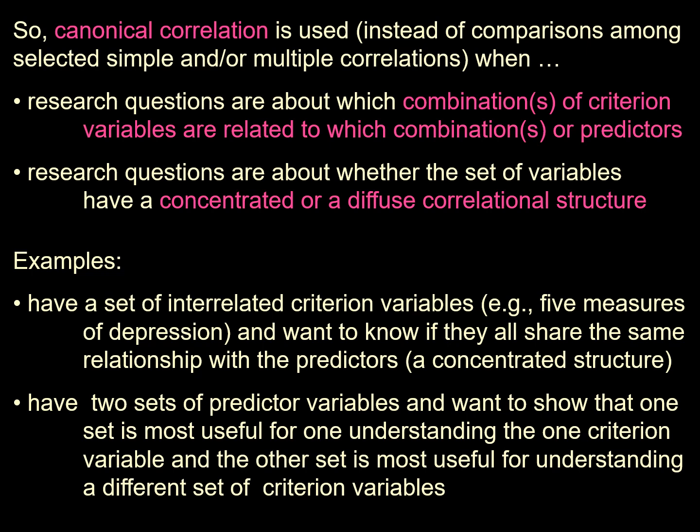For example: we have a set of interrelated criterion variables — say five measures of depression — and we want to know if they all share the same relation with the predictor. That is a concentrated structure. Alternatively, we may have two sets of predictor variables and want to show that one set is most useful for understanding one criterion variable and the other set is most useful for understanding a different criterion variable.